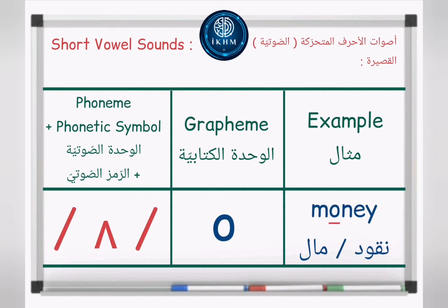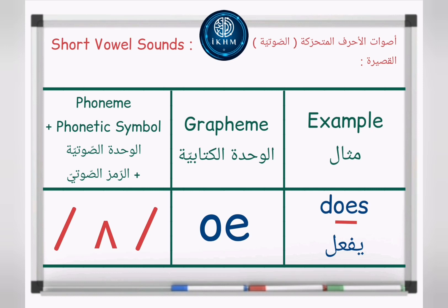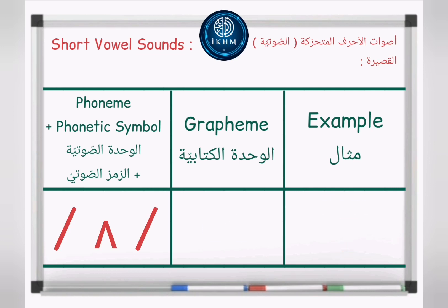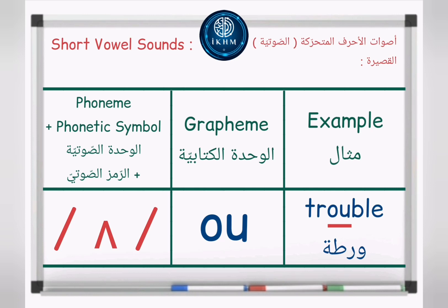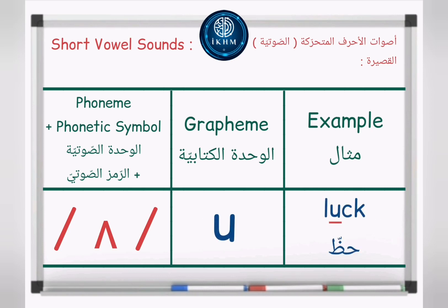Phoneme plus phonetic symbol: /ʌ/. Grapheme: letter O. Example — money, /ʌ/, money. Grapheme: letters O-E. Example — does, /ʌ/, does. Grapheme: letters O-E. Example — trouble, /ʌ/, trouble. Grapheme: letter U. Example — luck, /ʌ/, luck.